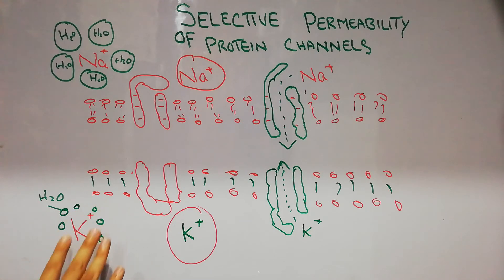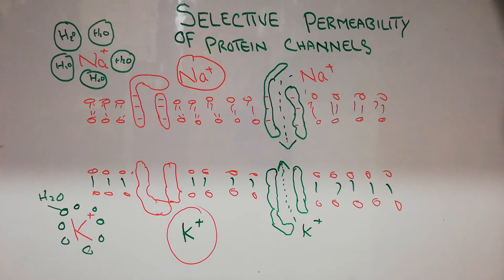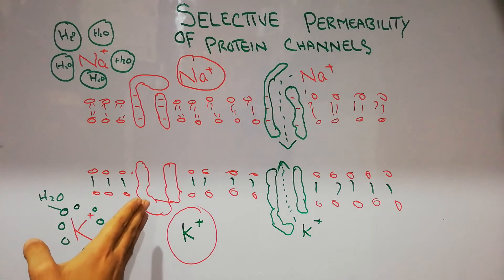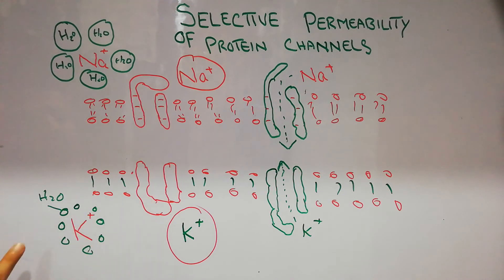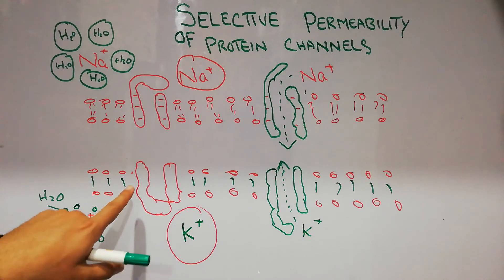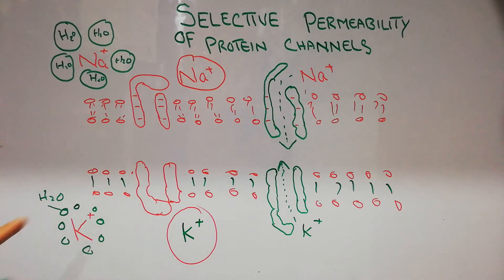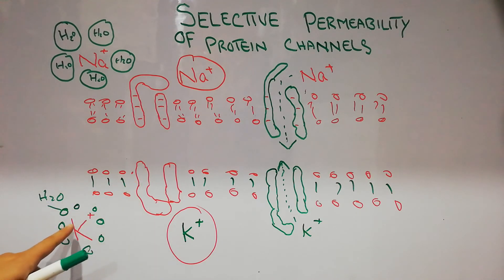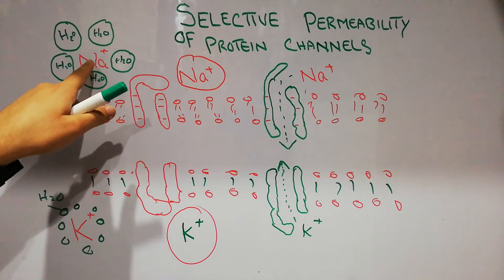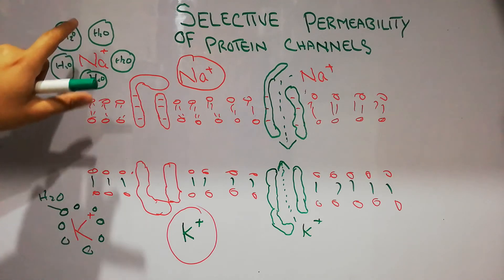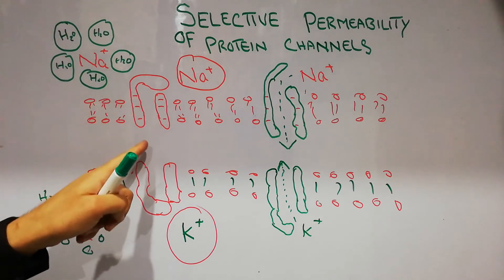The same is true for the potassium channel. When the potassium channel is closed, potassium ions will not be allowed to pass through it. But once the potassium channel is opened, the channel does not have sufficient charge to pull the potassium ion away from the surrounding water molecules. The sodium channel has sufficient charge to pull sodium out of the water molecule, allowing sodium to pass through.